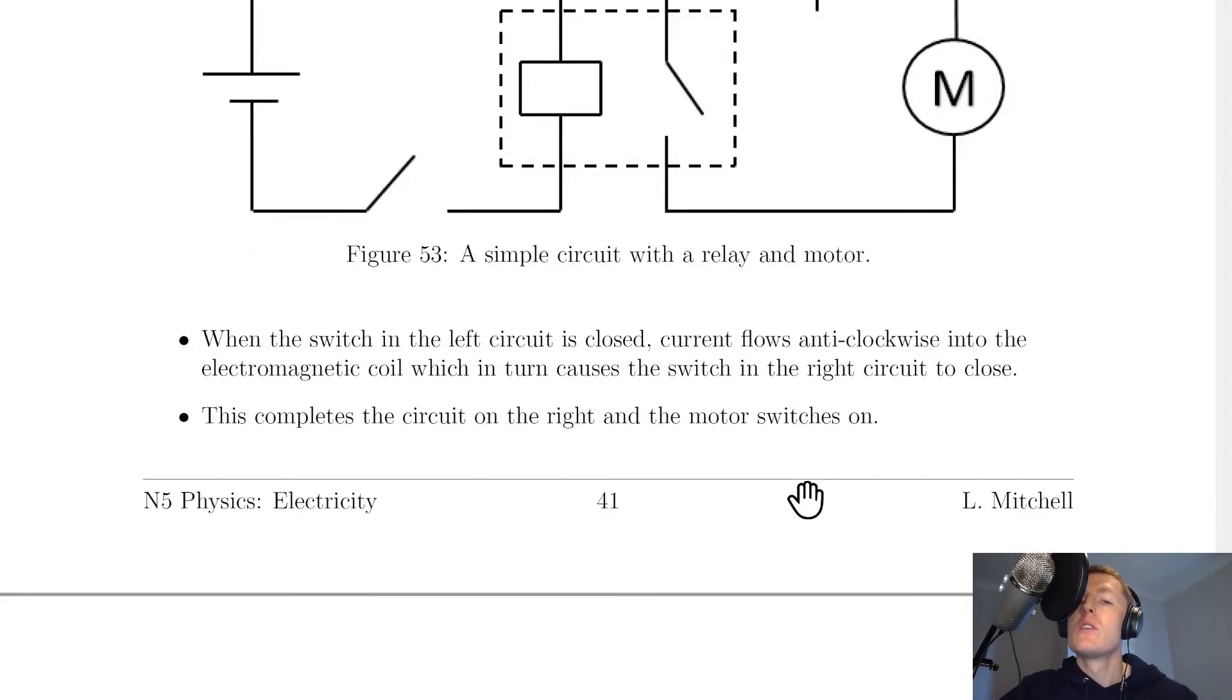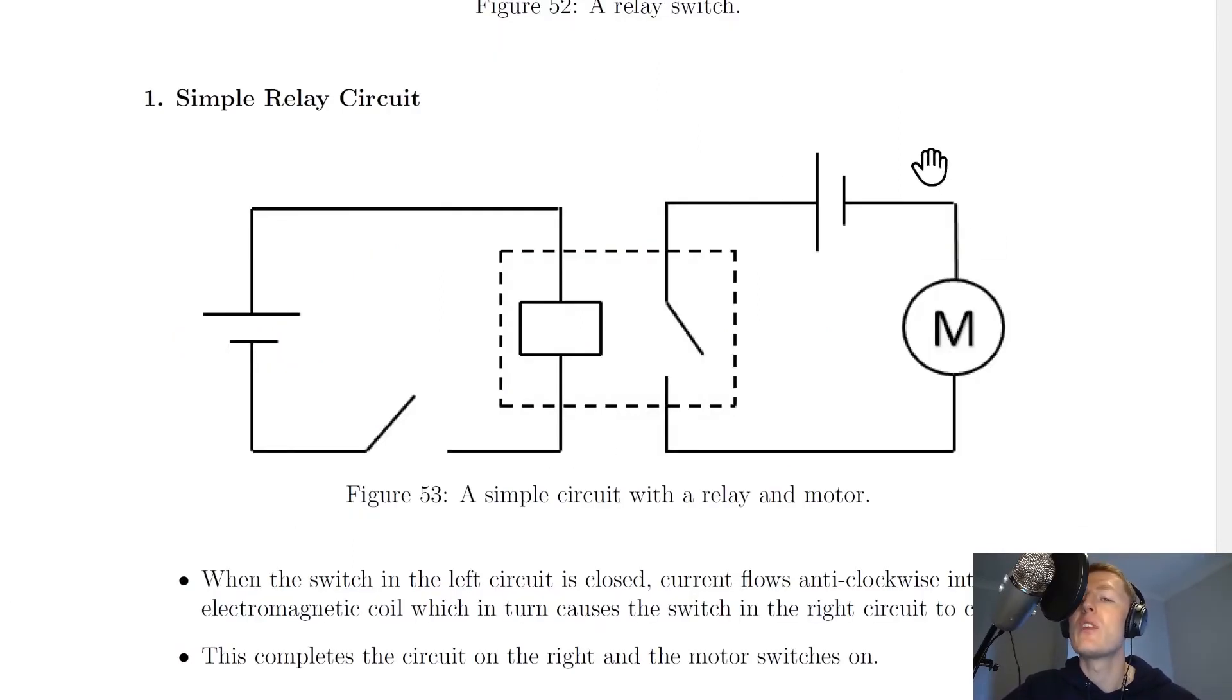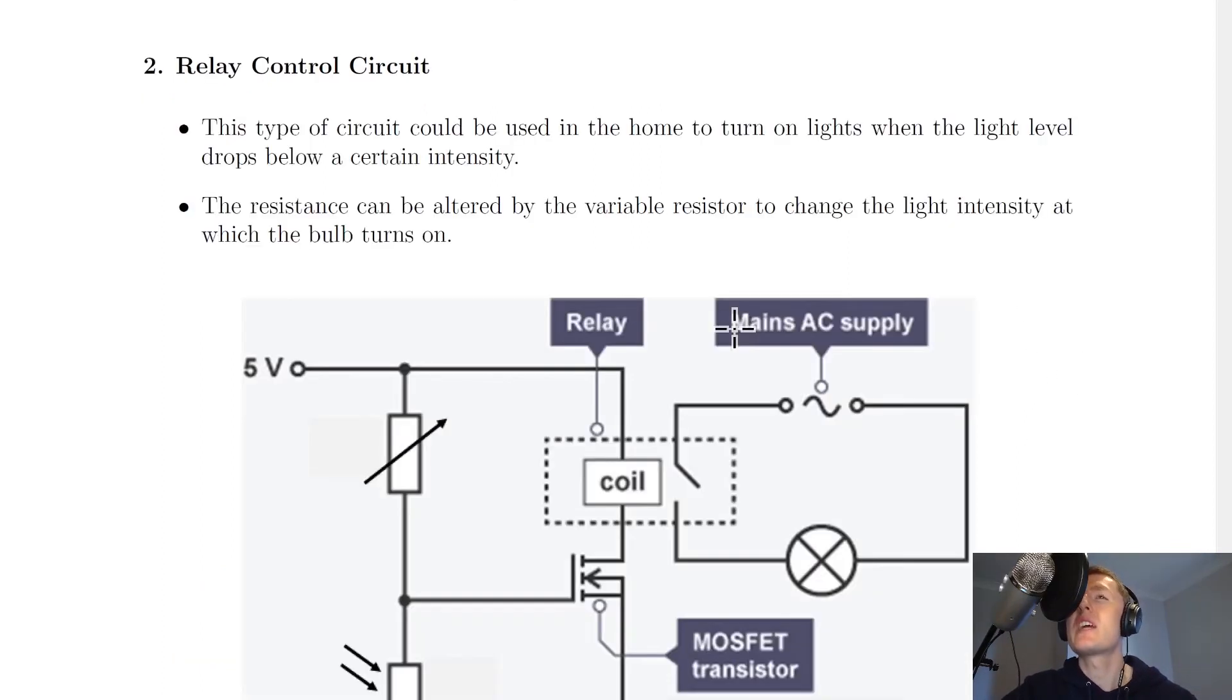So just to summarize that: it says when the switch in the left circuit is closed, current flows anti-clockwise into the electromagnetic coil, which in turn causes the switch in the right circuit to close. This completes the circuit on the right and the motor switches on. So this is likely to be our high voltage circuit because it's got a motor, and a motor would usually have a high voltage across it.